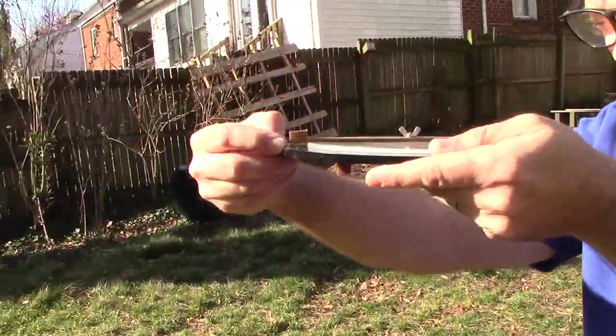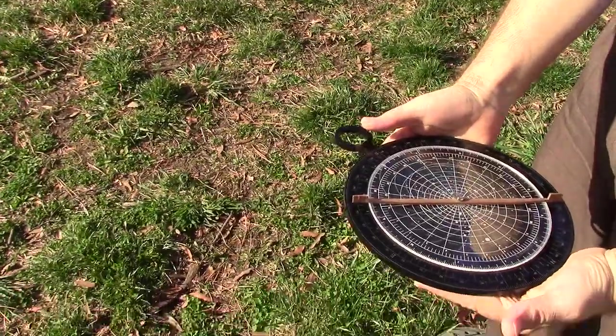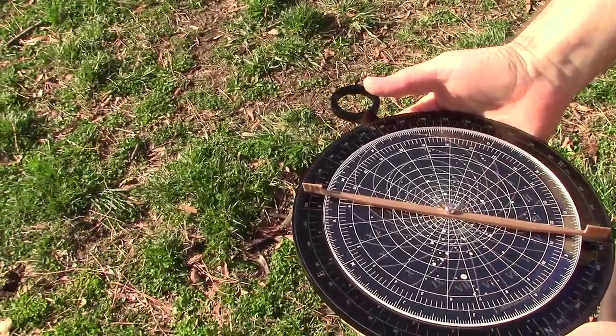If I turn now to put the sun at 125 degrees, now putting down the astrolabe, this is actually a true north oriented compass.